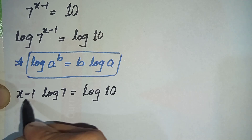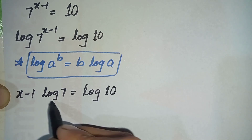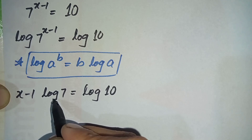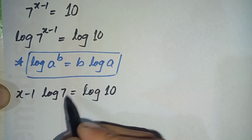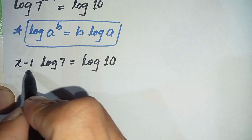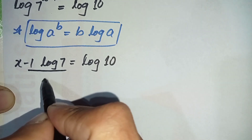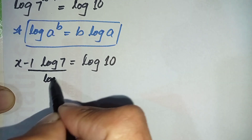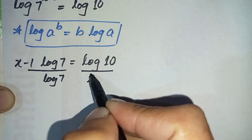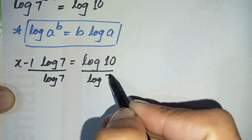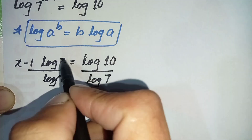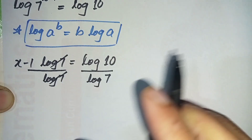Since we need to find the value of x, we will eliminate log of 7 from the left hand side by dividing both sides by log of 7. So from the left hand side, log of 7 and log of 7 cancel each other.